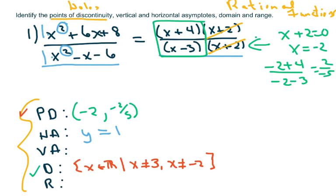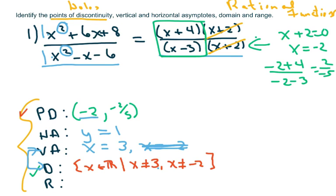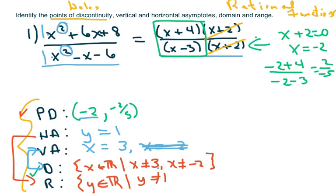The vertical asymptote has to do with both the domain and the hole or point of discontinuity. We have a vertical asymptote at x equals three. Normally we would have a vertical asymptote at x equals negative two as well, but we can't use that because we have a hole at negative two. The range always has to do with the horizontal asymptote, so the range is all real numbers; however, y cannot be one because there's a horizontal asymptote there.